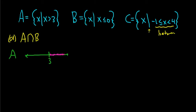And we're not including the 3 because we have the greater than sign. So that means we'll have a parenthesis. So this is the graph of the set A. Now let's look at the set B.